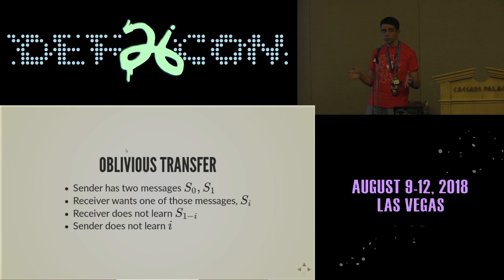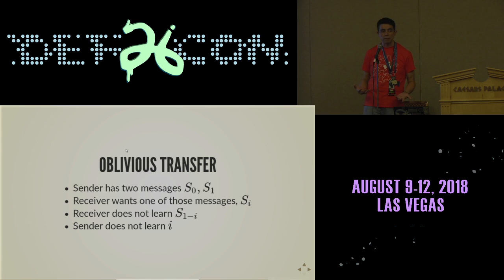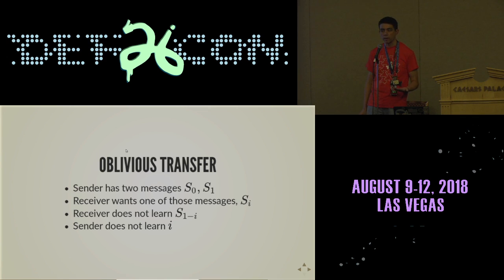The idea behind oblivious transfer is that a server has multiple messages, and a client wants to know what one of those messages is — but they don't want to tell the server which message they want, and the server doesn't want to reveal any message besides the one the client is asking for. This is a very interesting privacy-preserving protocol.